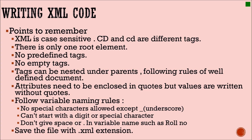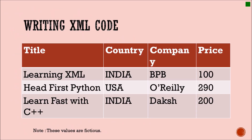Attribute values are enclosed in quotes. You should follow variable naming rules: you cannot use special characters except underscore. For example, you can write 'role_number' but not 'role number' or 'role.number'. You cannot start a tag name with a digit or special character. Save the file with a .xml extension, and write the code in Notepad or any simple text editor.